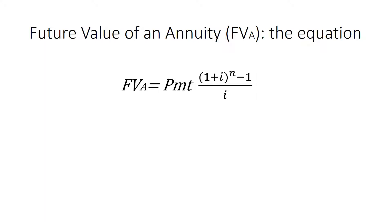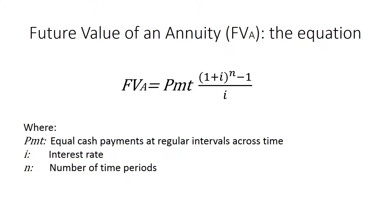Let's get started with the future value of an annuity equation. The equation has PMT, which is the payment — the equal cash payments at regular intervals across time — i (sometimes written as r), which is the interest rate, and n, which is the number of time periods.